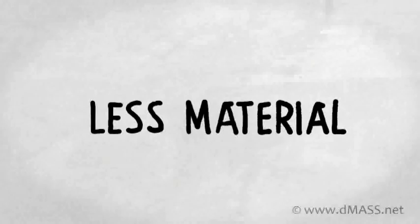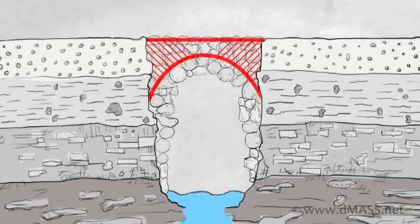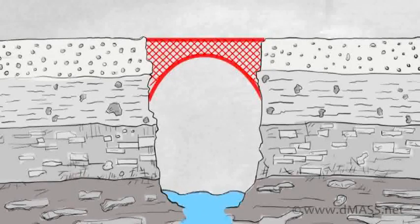So what they did was they replaced the stone above the arch with a triangular truss of iron tubes. And now even more of the mass was eliminated because there was no stone left in the bridge. There was only iron tubes with big spaces in between the tubes.